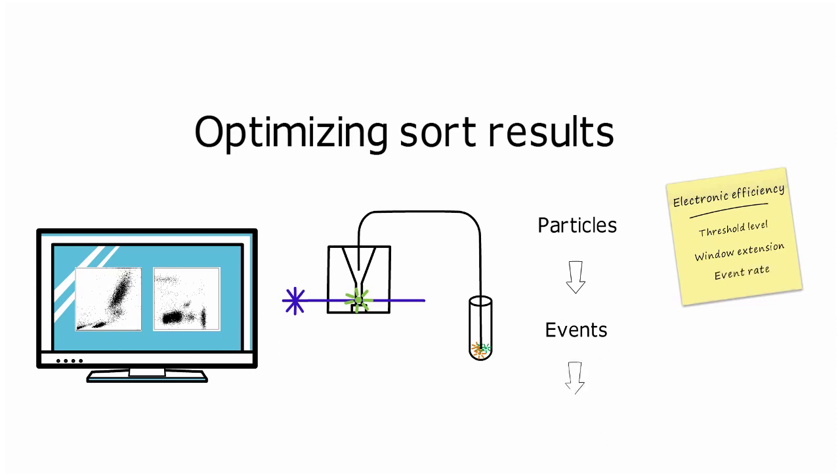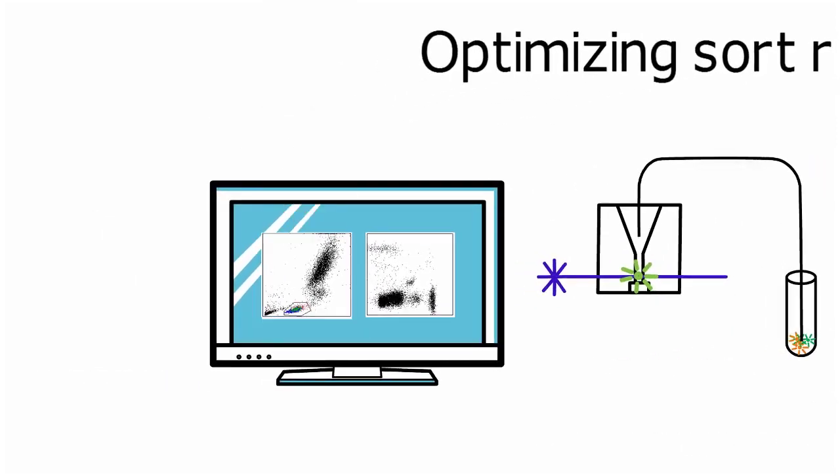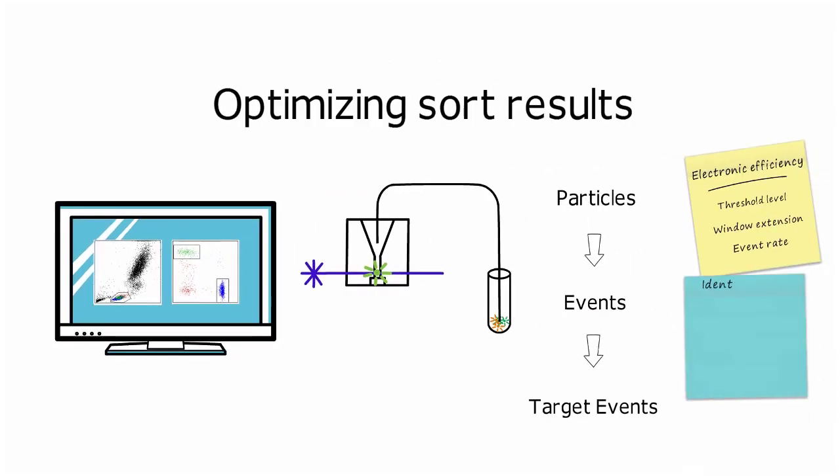The next stage in sorting is when processed events are identified as target events to be sorted. This is accomplished by analyzing the scatter and fluorescent signals to identify cells of interest through gating. To ensure that you are identifying the correct population to sort, you should first consider the resolution of your data.